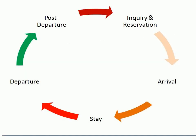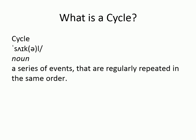Guest cycle consists of four phases: 1. Inquiry and Reservation, 2. Arrival and Registration, 3. Stay in the Hotel, 4. Departure, Checkout, and Settlement, and Post or After Departure. What is a cycle? A cycle is a series of events that are regularly repeated in the same order.